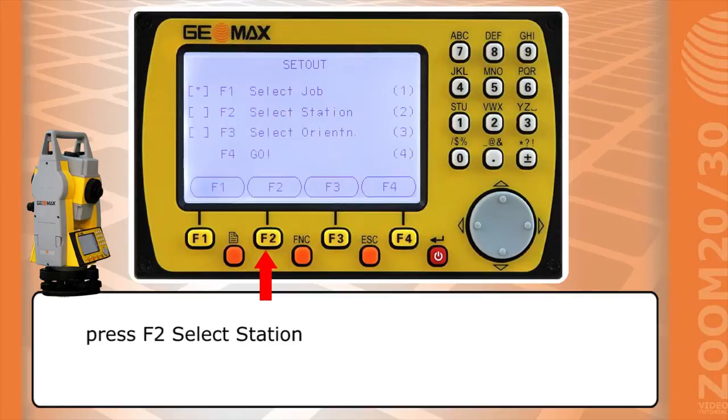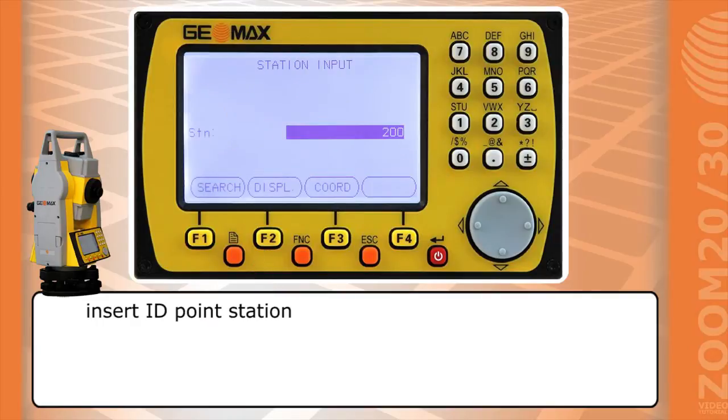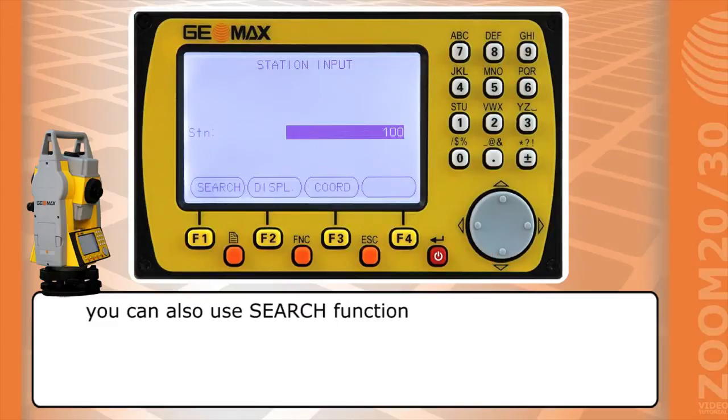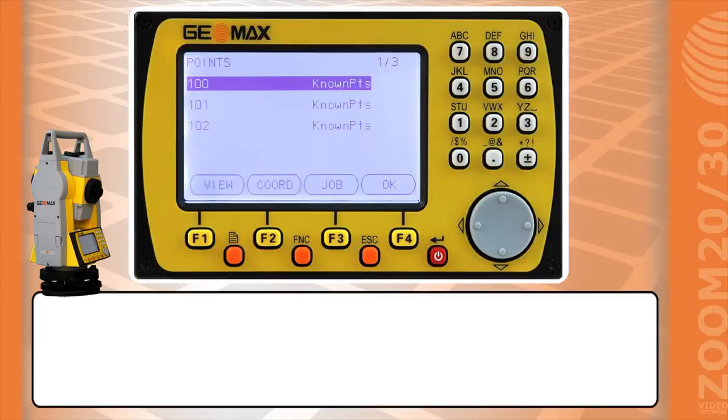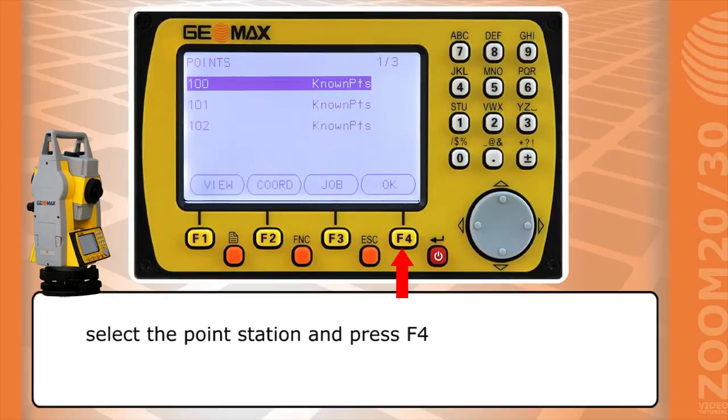Press F2 select station. Insert ID point station by keyboard. You can also use search function. Press F2 to display list of points. Select the point station and press F4.